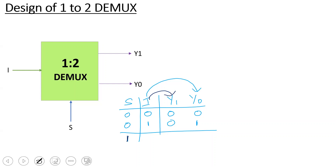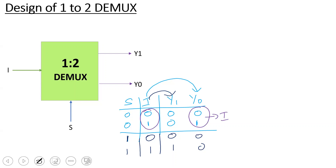When S equals 0 and I equals 0, Y0 equals 0 and Y1 equals 0. When S equals 0 and I equals 1, Y0 equals 1 and Y1 equals 0. When S equals 1, Y1 equals I. Note that Y0 equals I when S equals 0. This is the basic truth table for the 1-to-2 DEMUX.